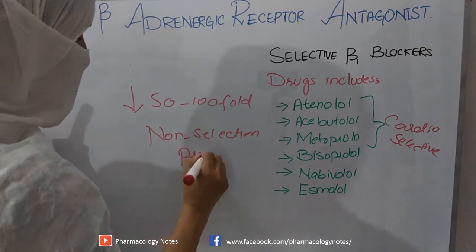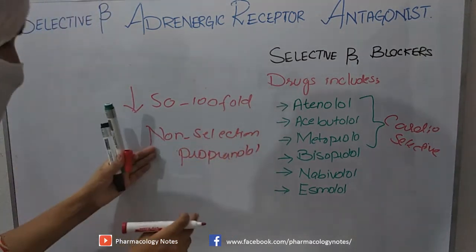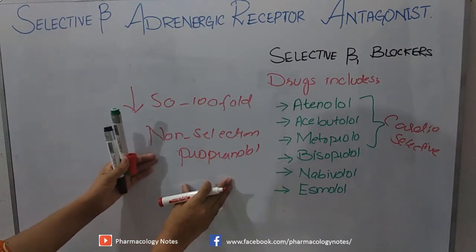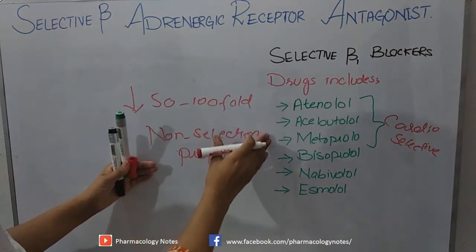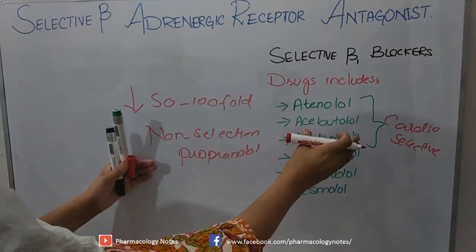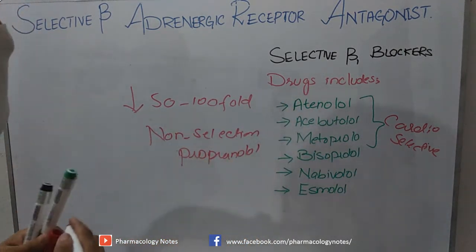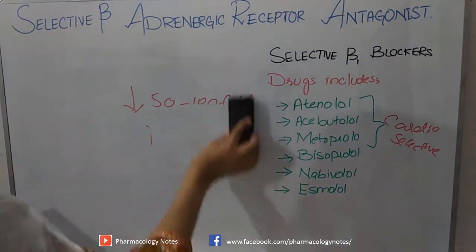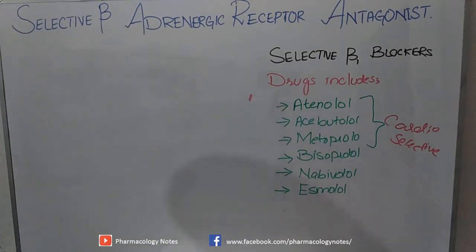For example, propranolol is a non-selective beta-blocker used in congestive heart failure and coronary artery diseases. But if we use atenolol, acebutolol, or metoprolol instead, the dose required is 50 to 100 fold less than propranolol. So at low doses we can achieve the same cardiac effect, and these drugs are cardioselective only at low doses, not high doses.